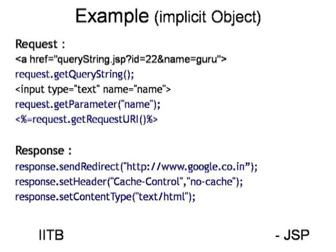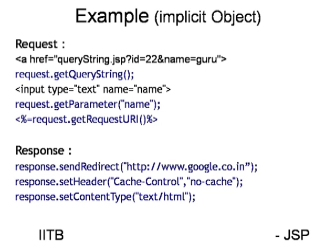If you have a form in your HTML or JSP page with a text field, when you submit the form, the data is sent to the next page. To retrieve the text field value, use 'request.getParameter()' with the name of the text box. For the response object — similar to the action tag's forward — we can redirect to a page using 'response.sendRedirect()' with a URL or page name.